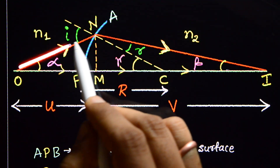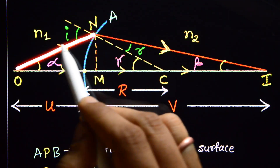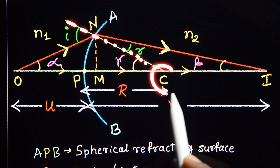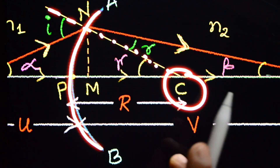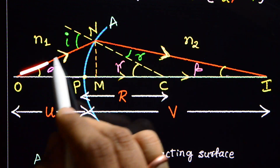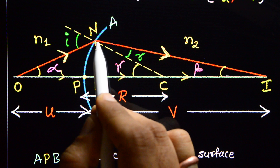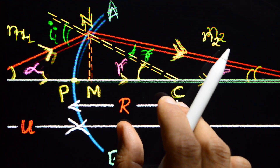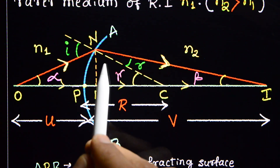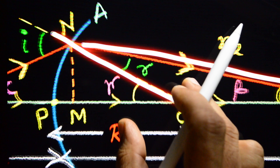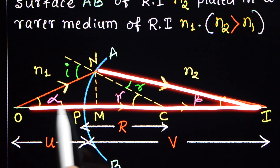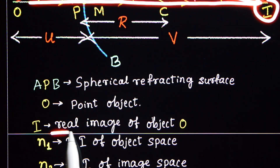Another ray from O, called ON, is another incident ray. The normal is drawn through the center of curvature of the spherical refracting surface. Since light is travelling from a rarer to a denser medium, it bends towards the normal. The angle between the incident ray and the normal is the angle of incidence i, and the angle between the refracted ray and the normal is the angle of refraction r. Both rays meet at point I, which is the real image of object O.